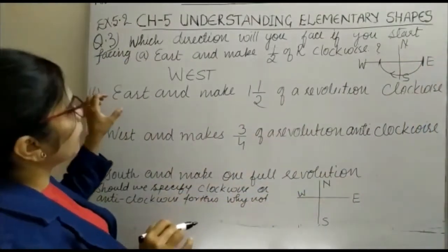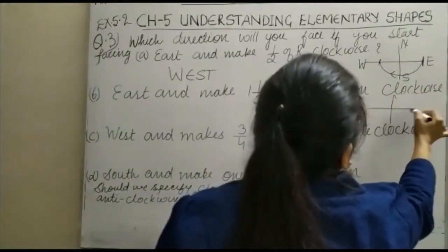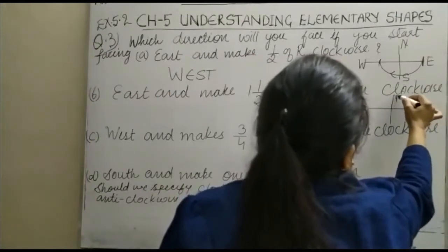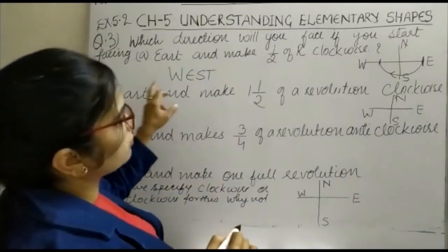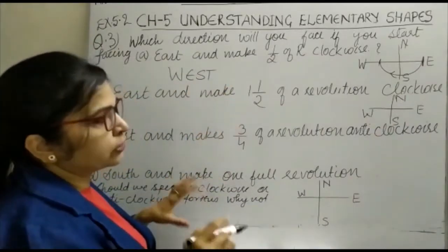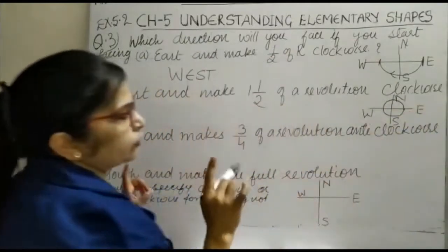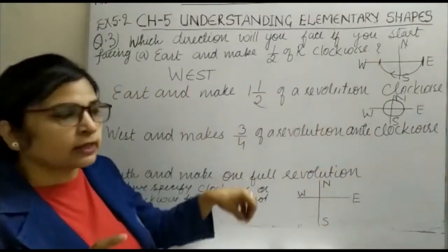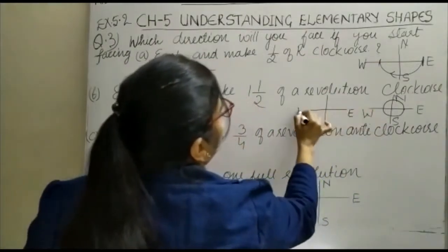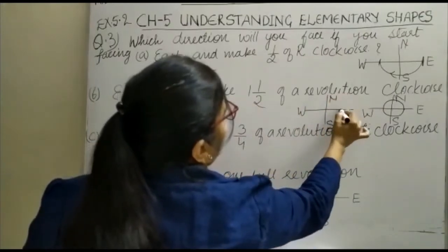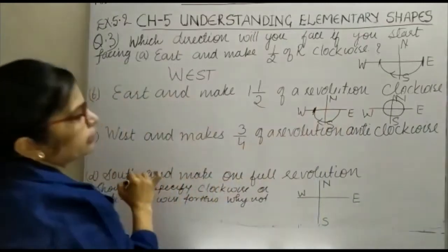Next question: you start from east. You can see here — this is your east, north, south, and this is your west. You are starting from east and make one and a half revolutions. You have to cover one full revolution first; after one revolution you come back to east, and then you cover half a revolution in clockwise direction, so you are again at west.